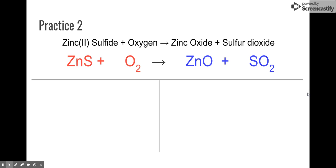So zinc two sulfide and oxygen gas react to form zinc oxide and sulfur dioxide. These are the correctly written formulas. They're not balanced yet, but these are the correctly written formulas. Make sure you know why these are all correct.